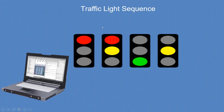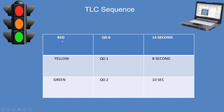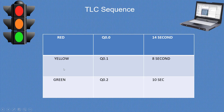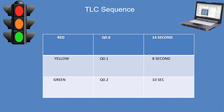Red is marked as Q0.0 output in the PLC and the timing for the red sequence is 14 seconds — red is on for 14 seconds. After that, red and yellow are on together. Yellow is on for eight seconds in any sequence it appears. Green is on for 10 seconds, then yellow is on for eight seconds, and this cycle repeats itself.